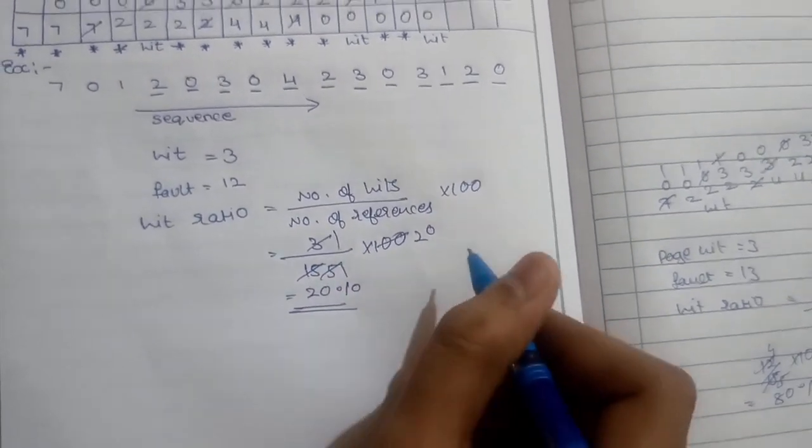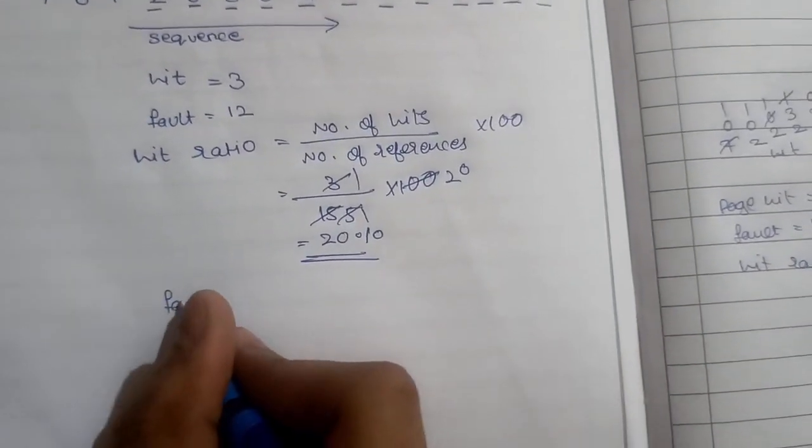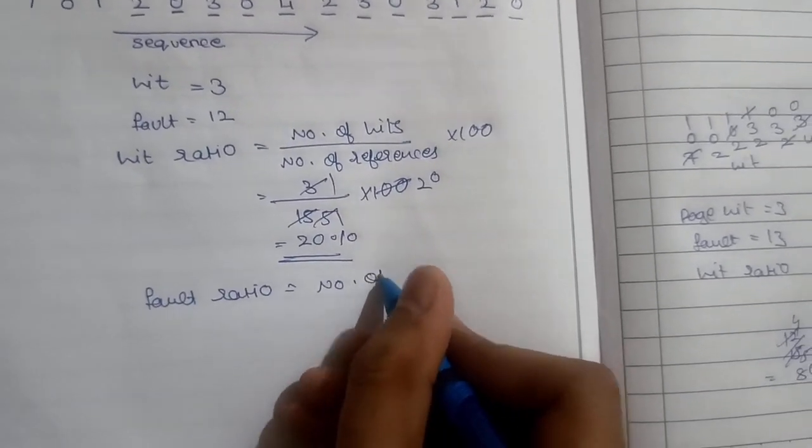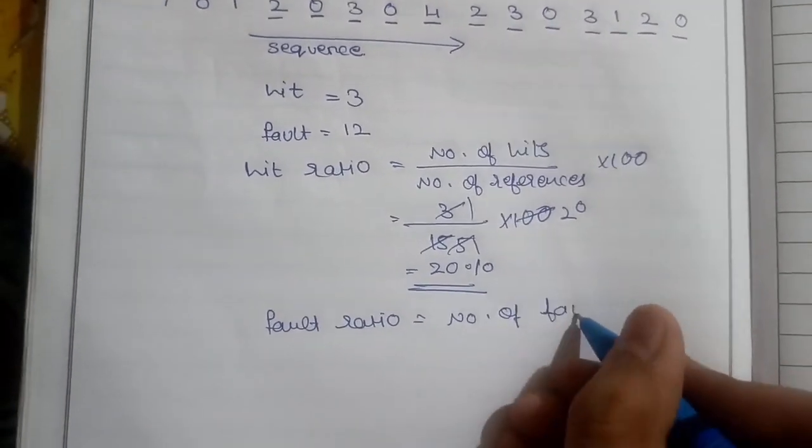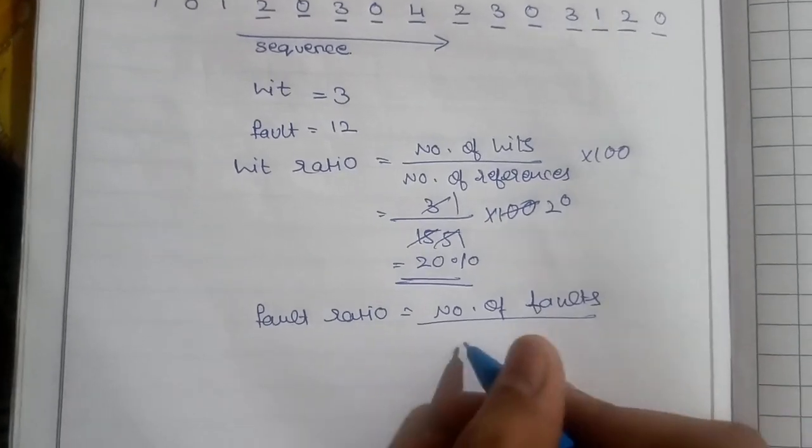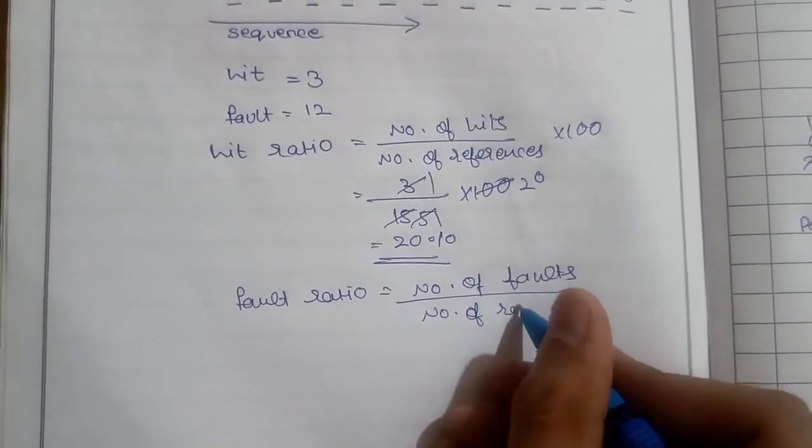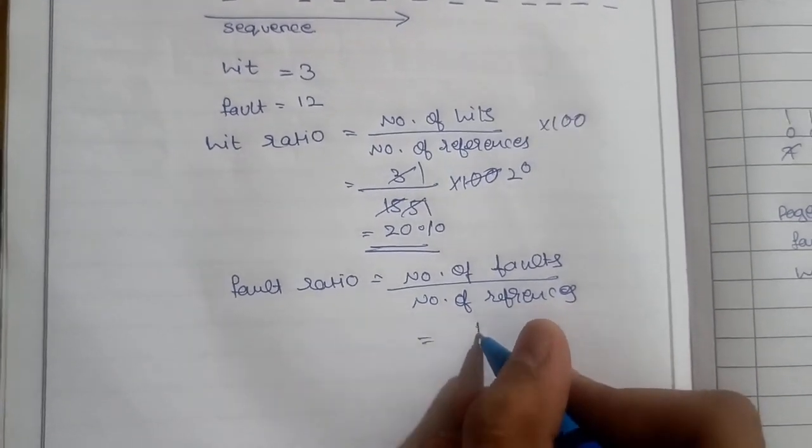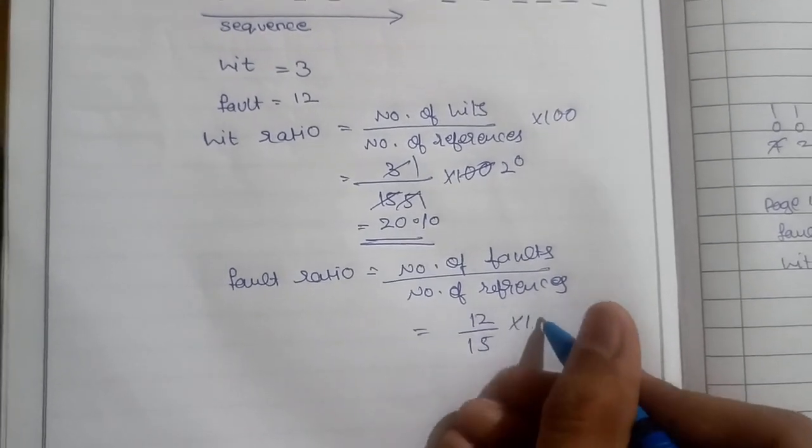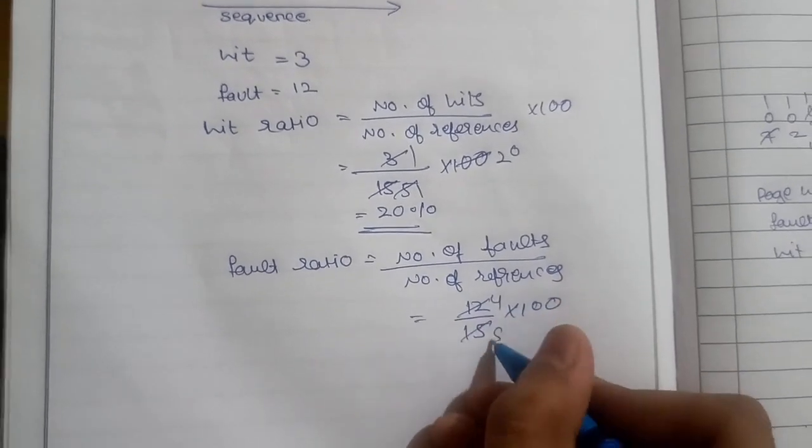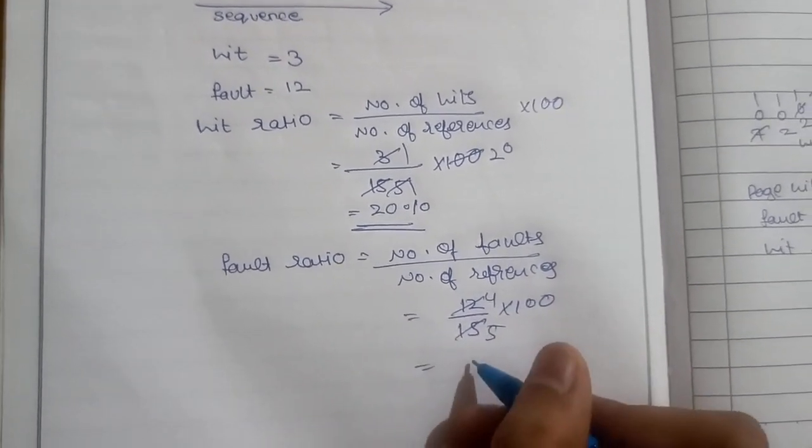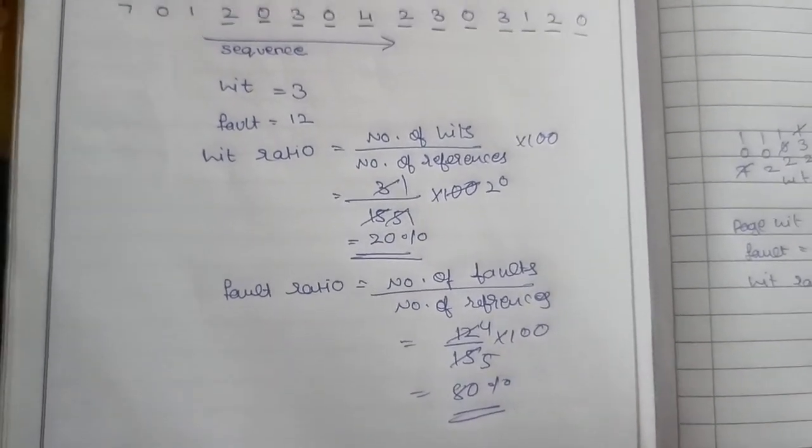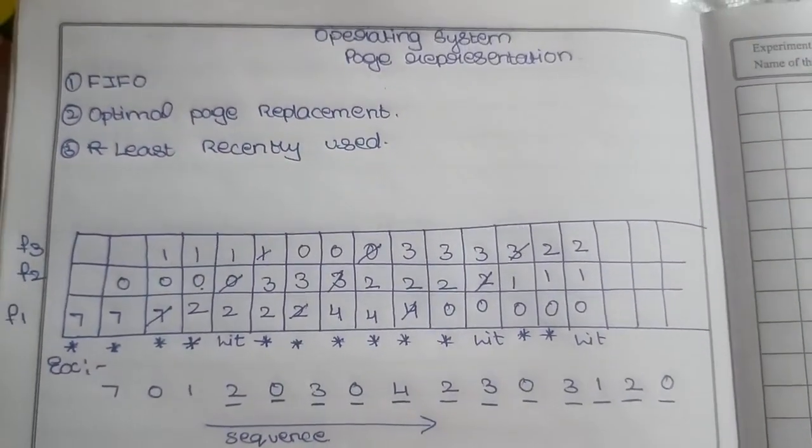For fault ratio, the formula is number of faults divided by number of references into 100. We have 12 faults, so 12 divided by 15 into 100 equals 0.8 into 100, which is 80%. This is the fault ratio.